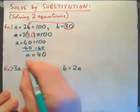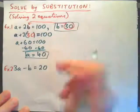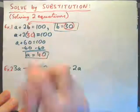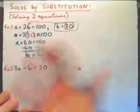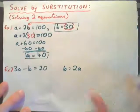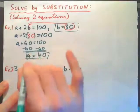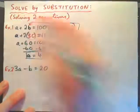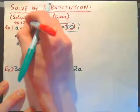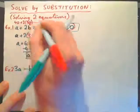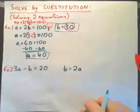We are done because we have found all numerical values for the variables: an apple costs 40 cents and a banana costs 30 cents. We can check by plugging in: 40 plus 2 times 30 is 40 plus 60, and that is indeed 100. So this equation works out.